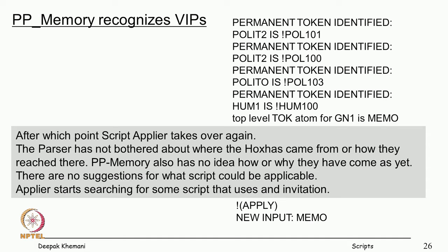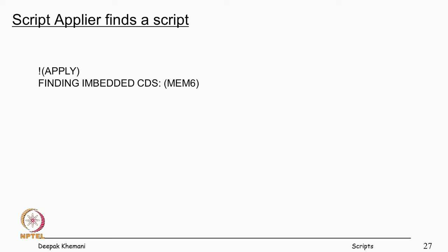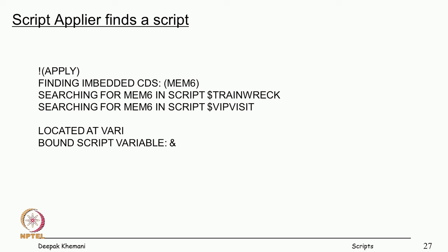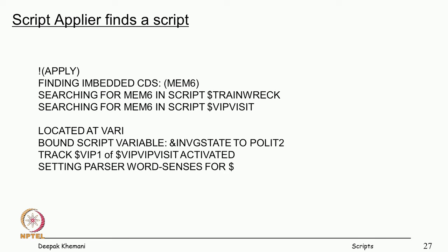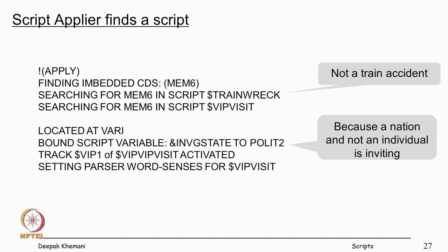Then they try to look for a script which will be applicable, passing control to the apply program. Apply had called parser, parser had called PP memory. Now back in the apply program with the structure called mem 0, apply starts looking for scripts. It first searches for train wreck — not applicable. Then it searches for VIP visit and says it has located a pattern match. It makes some bindings — there is a nation which is inviting — so it is a VIP visit, and it sets the parser word sense for VIP visit. Henceforth, everything it reads will be treated as part of the VIP visit script.